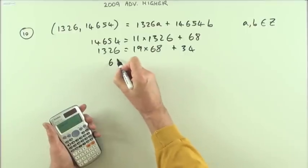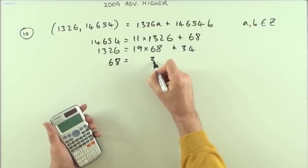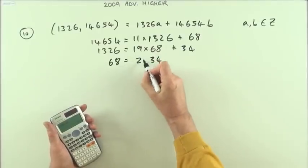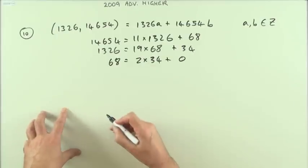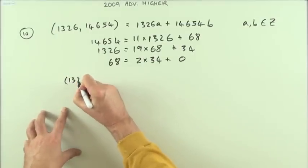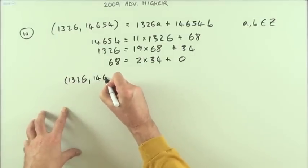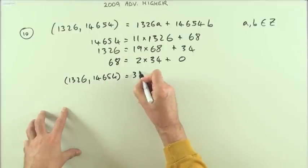68 is bigger than 34. 68 is going to be 2 times it, plus 0, so that's it finished. So 34 is the highest common divisor, so I can write this: 1326, 14654 equals 34.